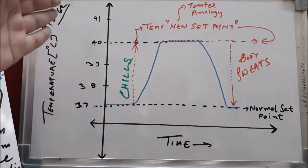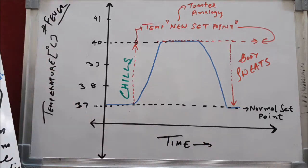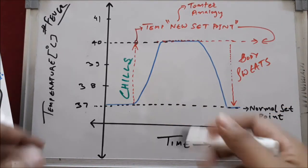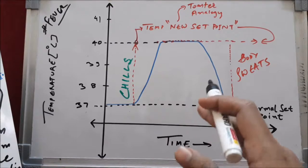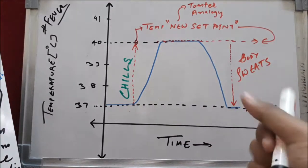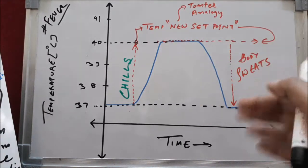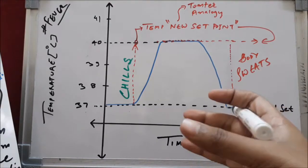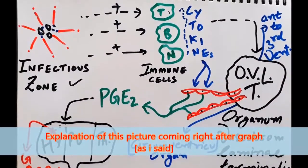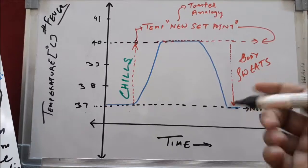On the graph, the y-axis shows temperature in degrees Celsius and the x-axis shows time. Fever is the end result of the inflammatory reaction which may happen in any part of the body. Whenever you hear about fever, you should know there is an inflammatory reaction taking place.